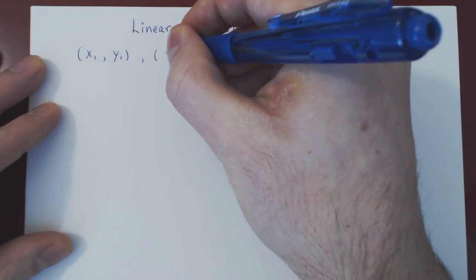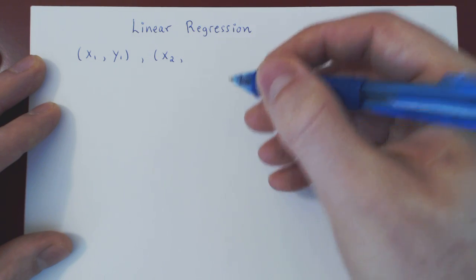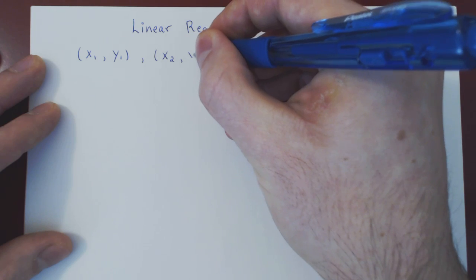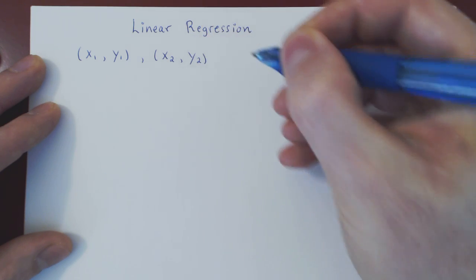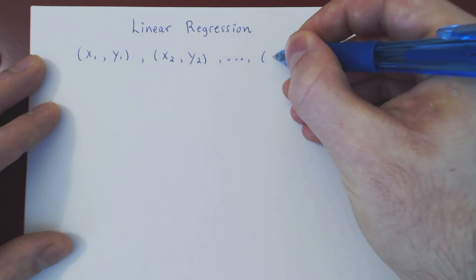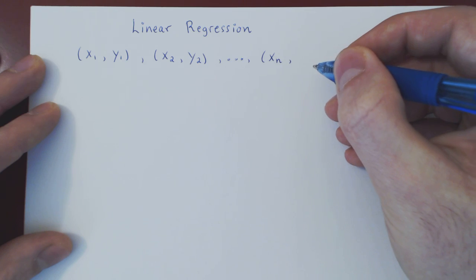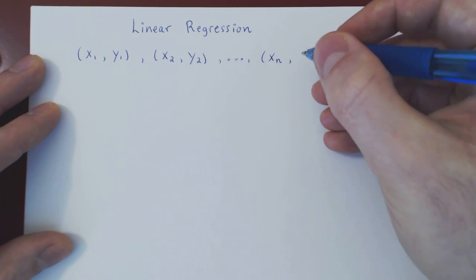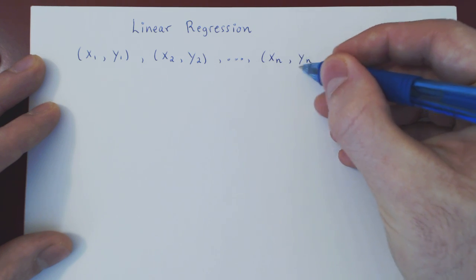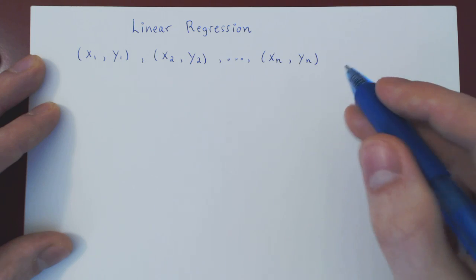Then you do the same thing — you sample again a value for x, your second variable, and you find the corresponding value for y, so x2, y2. And you sample in total n data pairs. So finally, the nth value xn for the first variable x, and the nth value yn that corresponds to xn for the second variable y. So we have n data pairs.